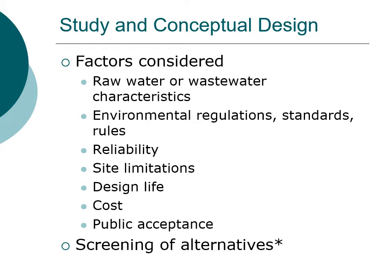When looking at raw water characteristics, you look at your source water — how variable is the water quality, and whether that source can actually supply the amount of water needed for the community. For wastewater characteristics, you look at composition, the strength of the wastewater, diurnal variations in flow rate, industrial or commercial sources, and issues with rainwater infiltration into your sewer systems.